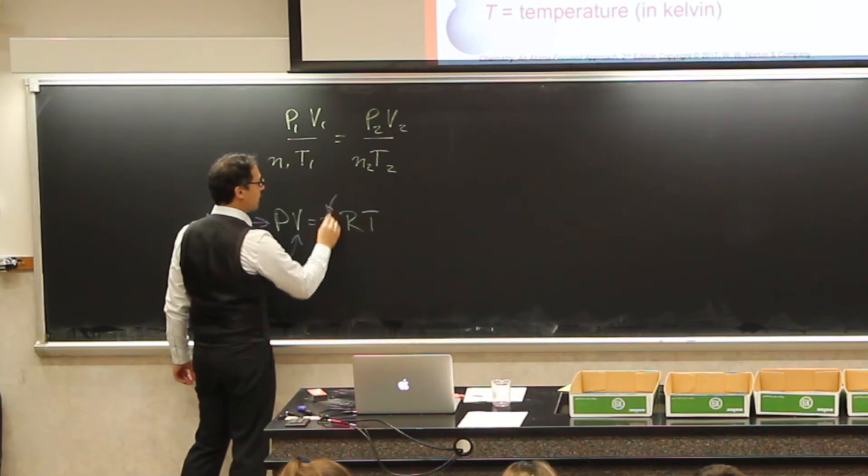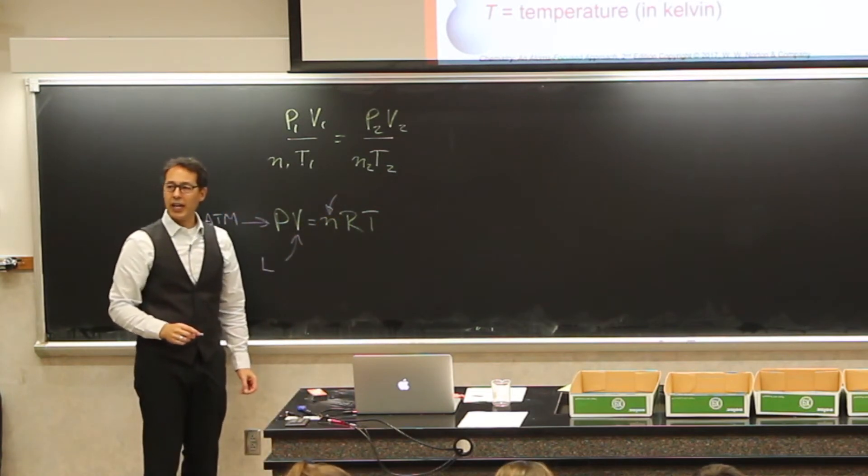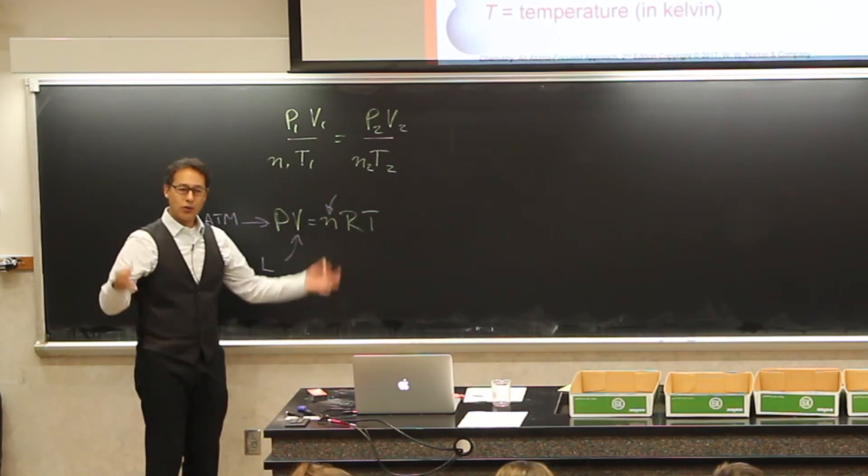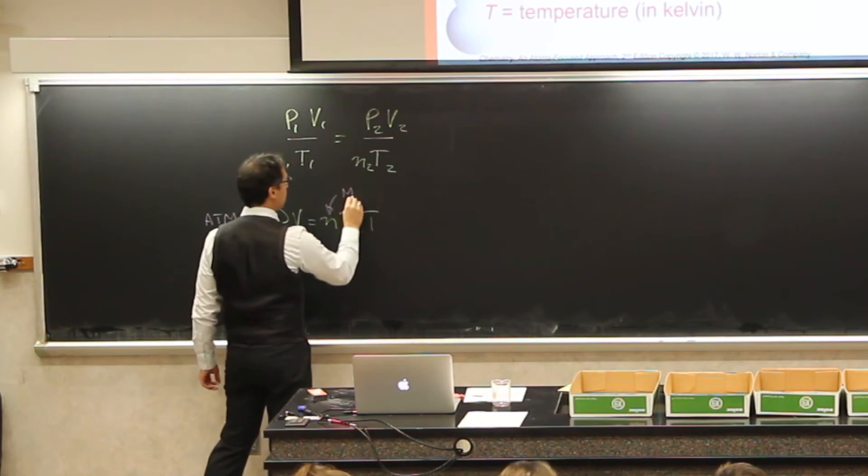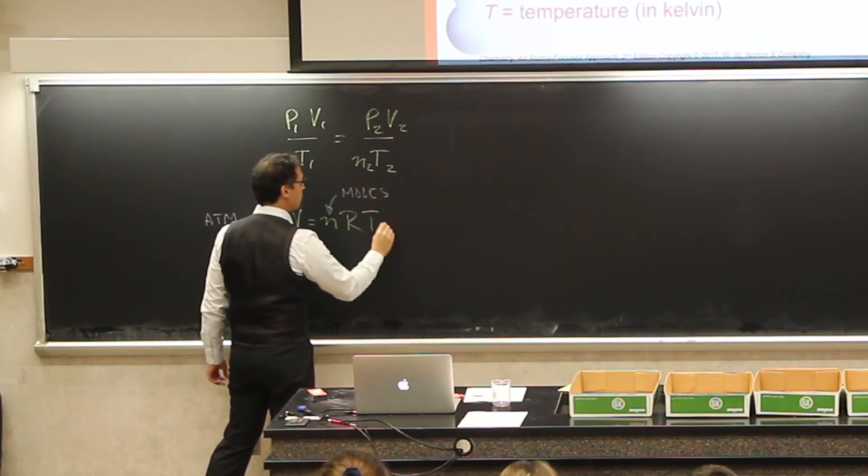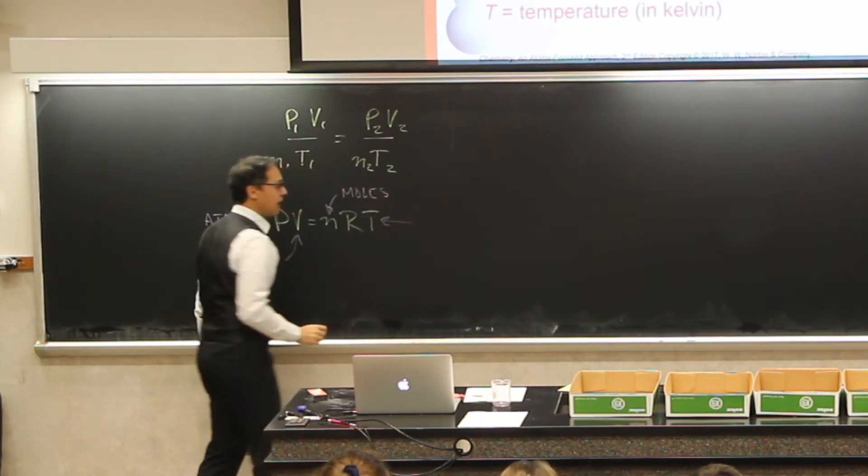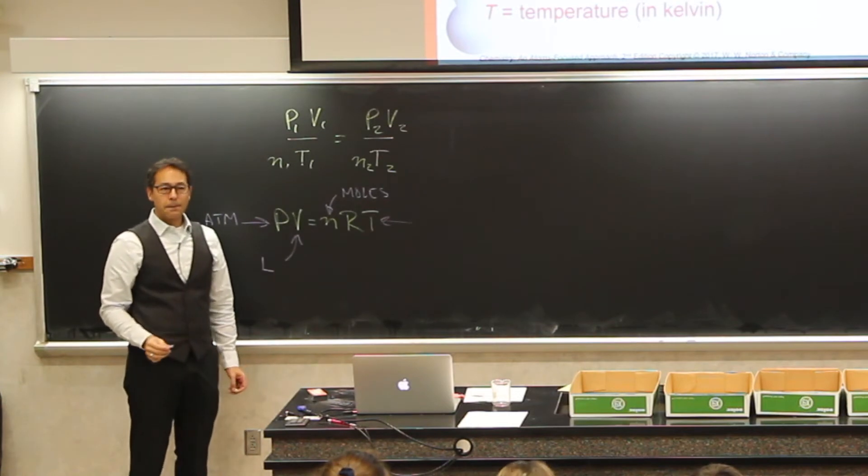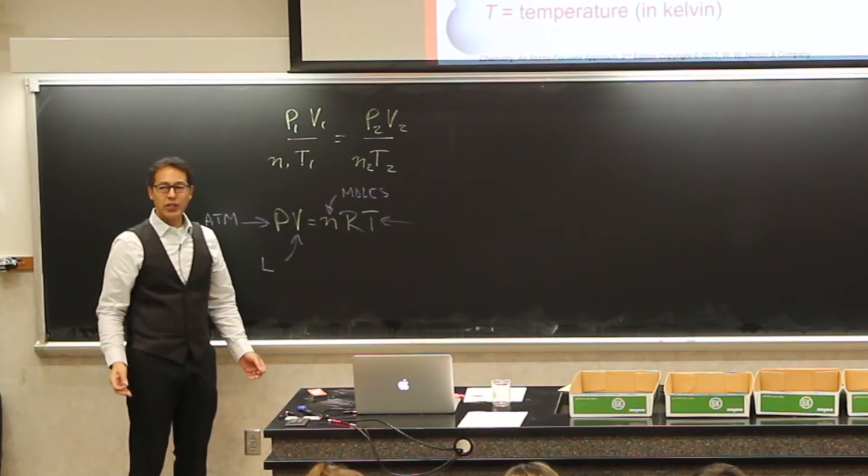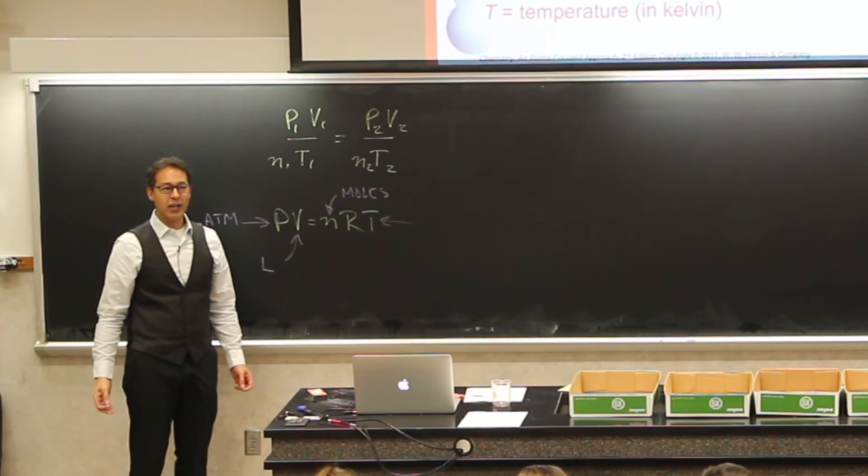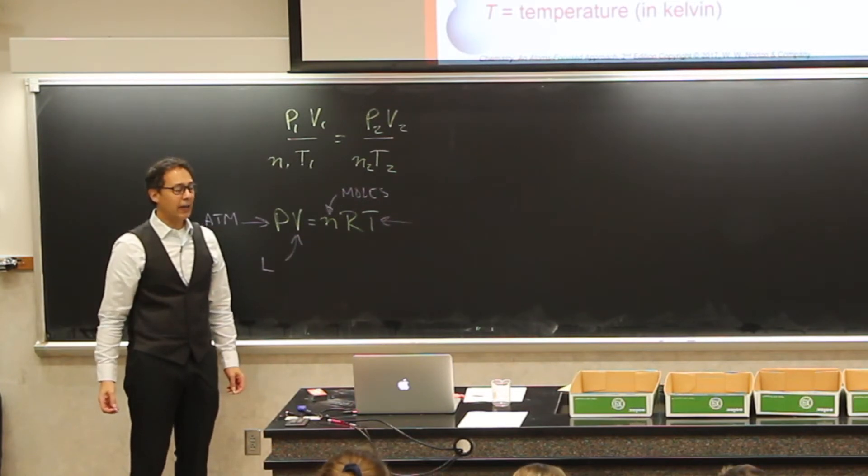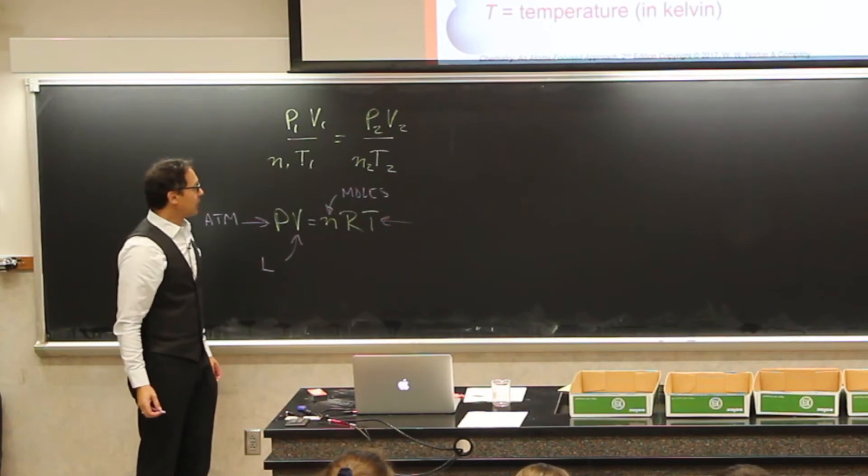And then here, we recognize that, what is n? Moles. Number of moles. And then here, we have temperature. Now, this gets a little bit tricky. Up to this point, we've been using Celsius instead of Fahrenheit, because Fahrenheit is pukey, and it's tough to do math on that. So, we've been using Celsius. But now, when we get to the gas laws,